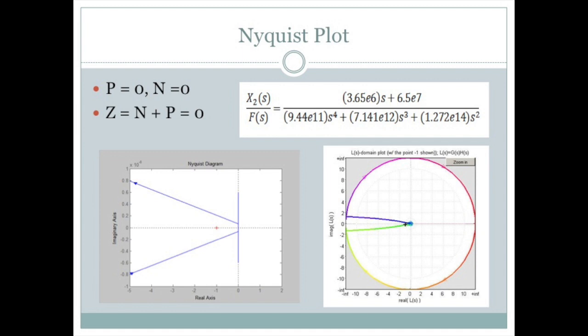Because the circle does not enclose negative one, we can say N is equal to zero. Because Z is equal to N plus P, we can say Z is equal to zero. Then we can determine this is closed loop stable.